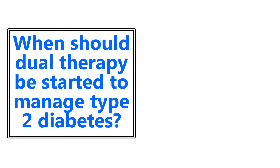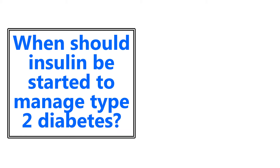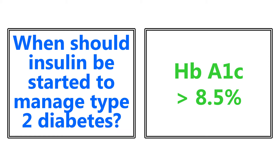When should dual therapy be started to manage type 2 diabetes? This is for a hemoglobin A1c of 7.0 to 8.5 percent, and the typical regimen is metformin plus a sulfonylurea, one of the more common ones being glyburide. And to follow that up, when should insulin be started to manage type 2 diabetes? This is when things get even worse, and you have a hemoglobin A1c of greater than 8.5. Definitely know this, especially with the Comlex. They love the primary care things. Diabetes management is bread and butter, so please know that.